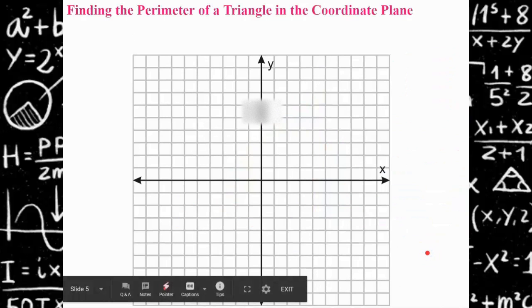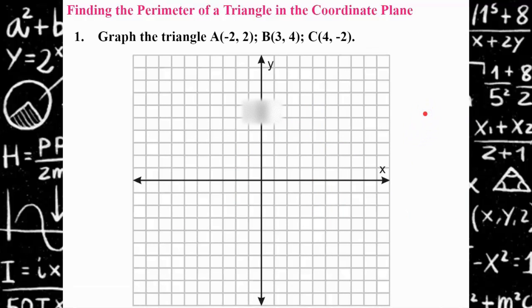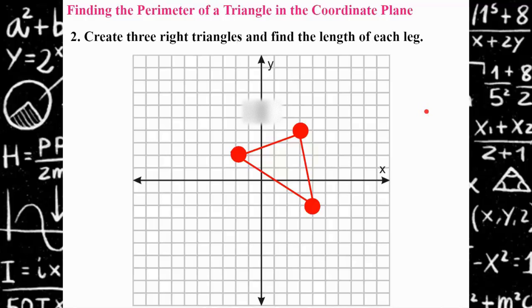All right, so now we can also use this to find the perimeter of a triangle in the coordinate plane. So we're going to graph the triangle given these ordered pairs, and we want to find the perimeter. So the perimeter is the distance around the triangle, the sum of all three sides. All three of these sides are diagonally placed in the coordinate plane. So we need to create three right triangles and find the hypotenuse of each right triangle.